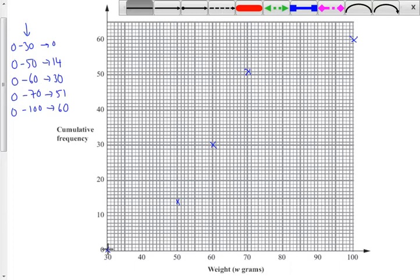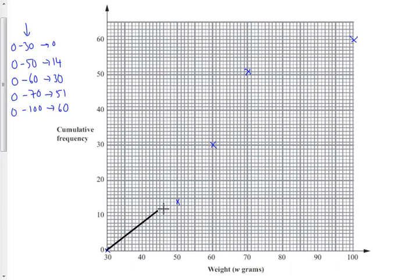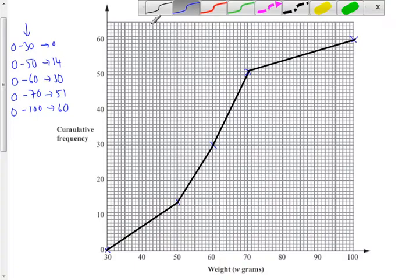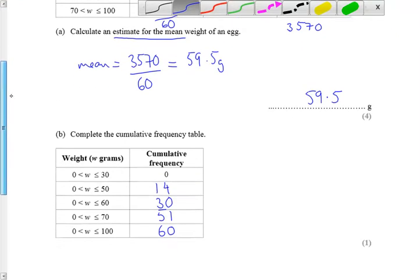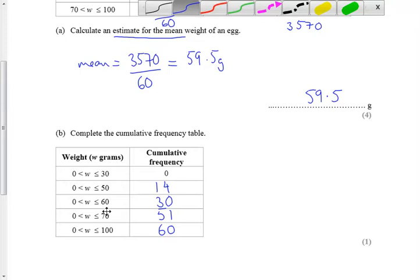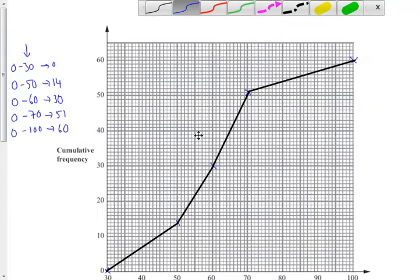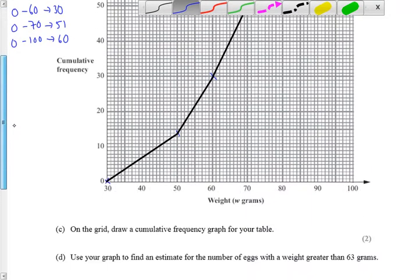Now we're going to join these up with a straight line. Not a line of best fit, but just a dot to dot. Apologize for that little extra line in there. Okay, so we've now plotted our information from our cumulative frequency table. And the information here, 14, 30, 51, 60, at those points, we've now plotted it on our cumulative frequency graph. So that was the first thing we need to do.